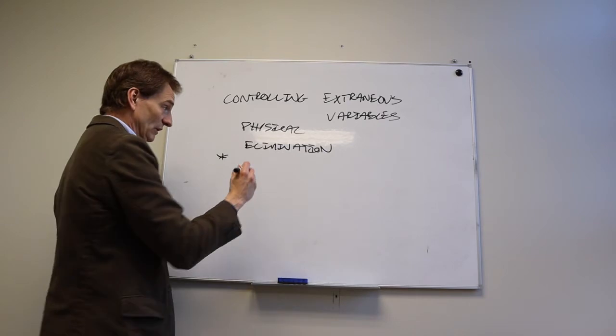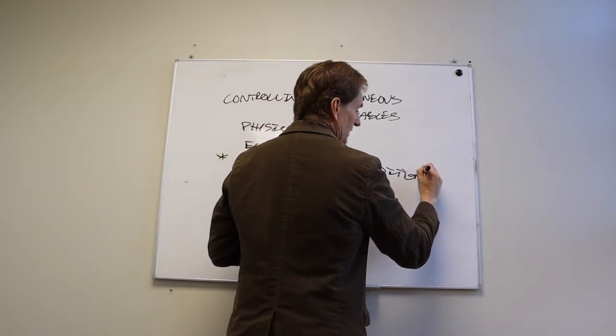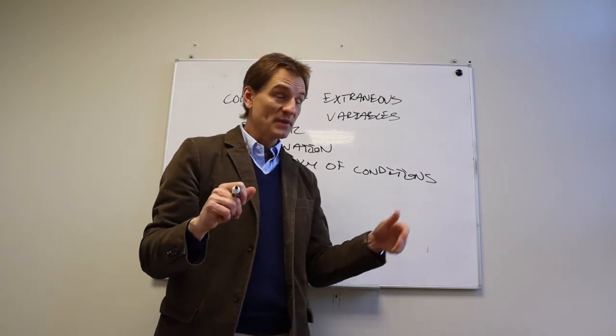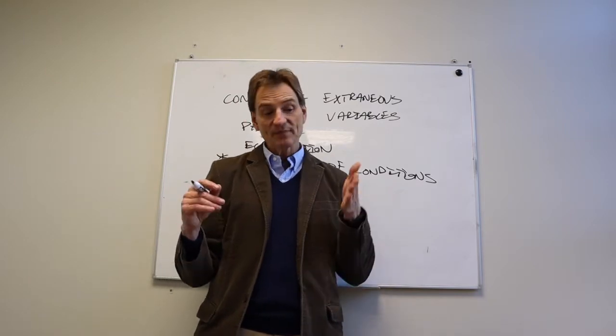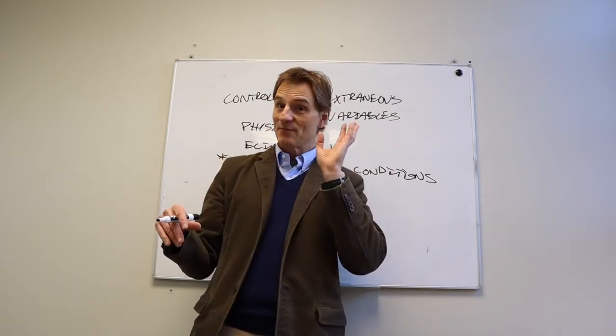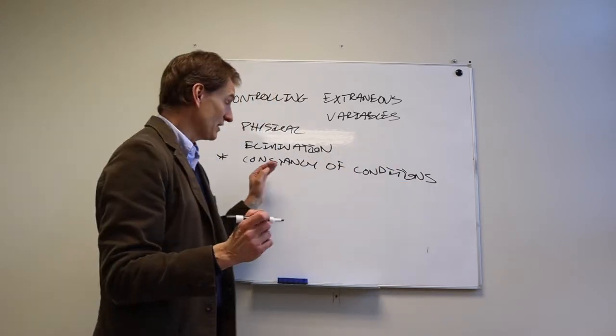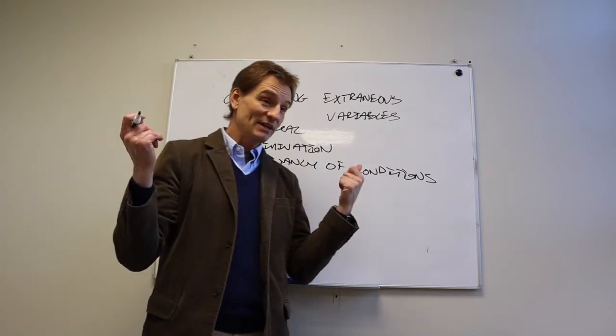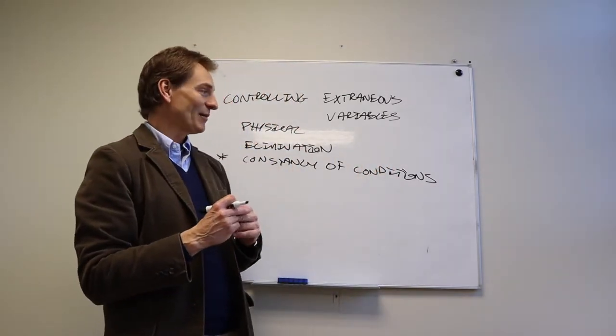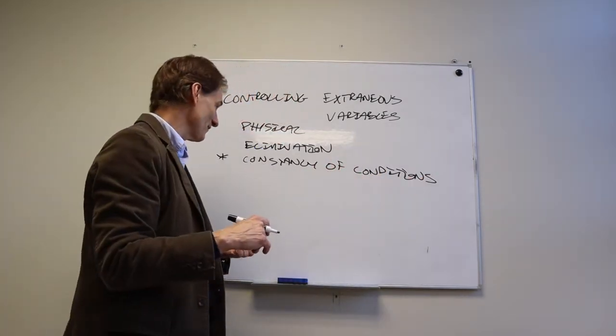I'm going to put a star next to this one because it's very important, which is constancy of conditions. What constancy of conditions means is to the greatest extent that we can, we run everybody the exact same way. So like for example, in terms of research protocol, if we can, let's run everybody in the same room on the same day of the week, always run them on Wednesdays, always run them at the same time, let's say seven o'clock, and always use the same researchers. Because constancy of conditions controls for extraneous variables that we haven't even identified. Maybe day of the week is important, maybe the person who's running the research makes a difference. We don't know.